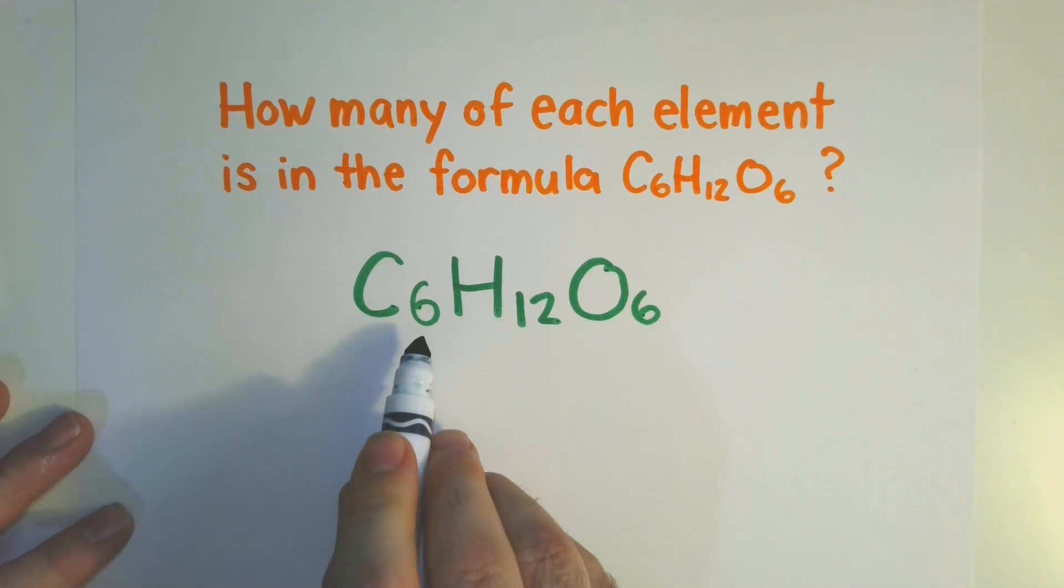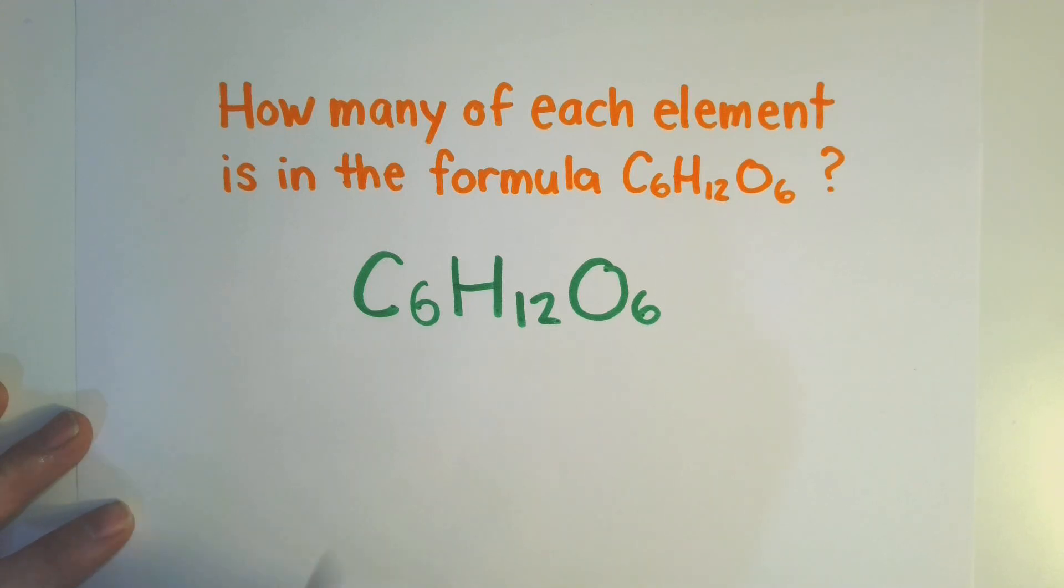Well, we look at the subscripts. Our carbon atom here, it has a subscript of 6. So that subscript tells us how many of that particular element is in the molecule.